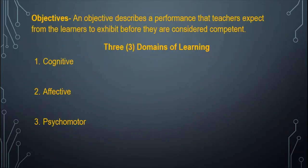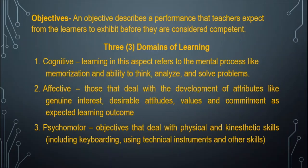An objective describes a performance that teachers expect from learners to exhibit before they are considered competent. There are three domains of learning: the cognitive, affective, and the psychomotor. The cognitive domain — learning in this aspect refers to the mental process like memorization, abstract thinking, analyze, and solve problems. In affective, those that deal with the development of attributes like genuine interest, desirable attitudes, values and commitment, as expected learning outcome. And in the psychomotor, objectives that deal with physical and kinesthetic skills including keyboarding, using technical instruments, and other skills.